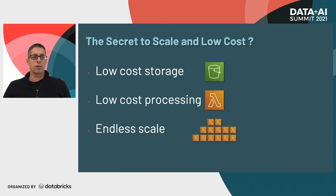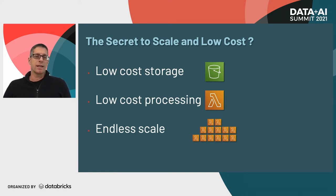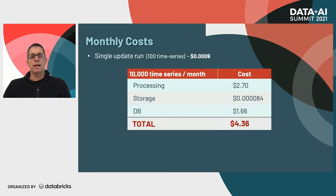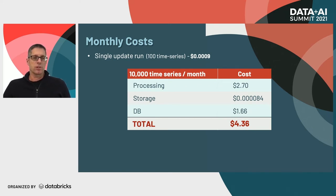So what's the secret to scale and low cost? We use low-cost storage — S3. We use low-cost processing — Lambda functions that terminate once processing is complete, so we no longer pay for them. And we get endless scale because we can invoke as many Lambda functions as needed as the system grows. For 10,000 time series running a prediction once a day, we pay a mere $2.70. Storage is very negligible, and the DB is also cheap since we store only a small set of anomalies. In total, for 10,000 time series, we pay $4.36 a month — which is obviously negligible.